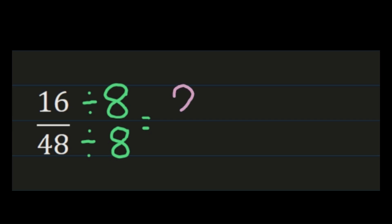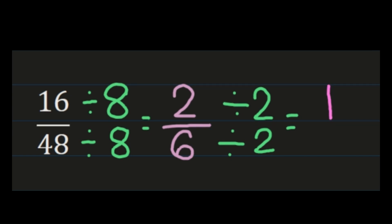And one thing that getting started does is it gives you smaller numbers to work with. So now you have two-sixths, and again, you can see very quickly and easily that they share a common factor of two. So I'm going to divide my numerator by two, and I'll divide my denominator by two. So I now have two divided by two, which is one, and six divided by two, which is three.